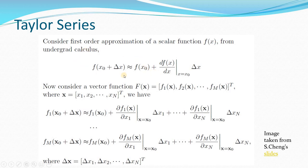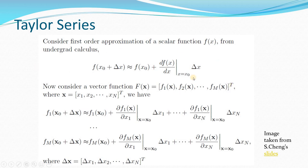Let us briefly go through the Taylor series. Consider a scalar function f of x. I split x into x-naught plus delta x. By Taylor series, f(x-naught + delta x) is approximated as f(x-naught) plus the derivative of f at x-naught multiplied by delta x. That is the Taylor series for a scalar function.